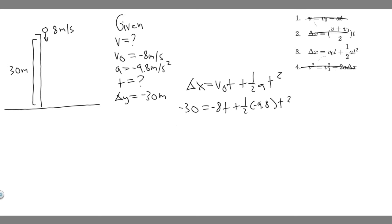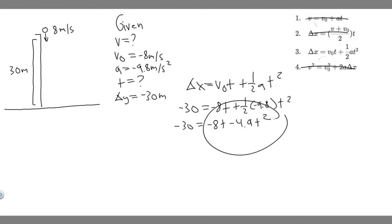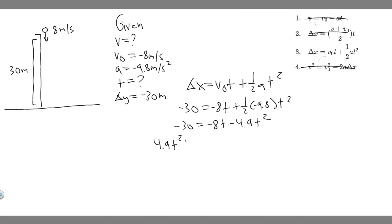Expanding this out: minus 30 equals minus 8t plus one half times minus 9.8, which is minus 4.9t squared. To solve this we notice it's in quadratic form — we have a t squared term and a t term. Moving everything to the other side gives us: 4.9t squared plus 8t minus 30 equals zero. This is a quadratic equation, so how do we solve for it?